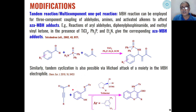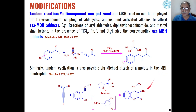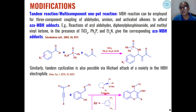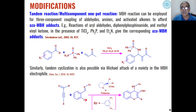Tandem cyclization is also possible in carbon-carbon triple-bonded compounds that undergo reaction with carbon-nitrogen double-bonded compounds to give MBH electrophilic products. Here, proline derivatives act as catalyst in the presence of toluene as solvent, and aza-MBH adducts are formed through cyclization involving the carbon-carbon triple-bonded compounds.